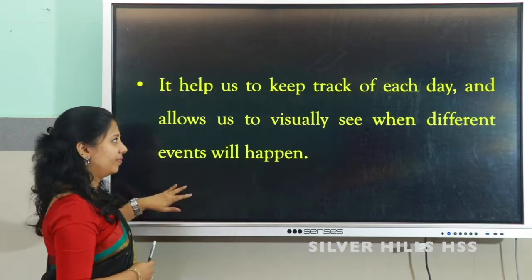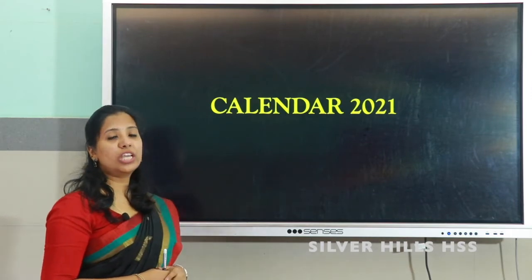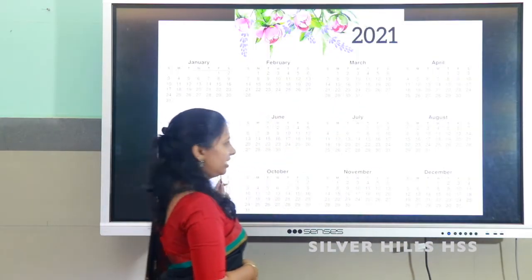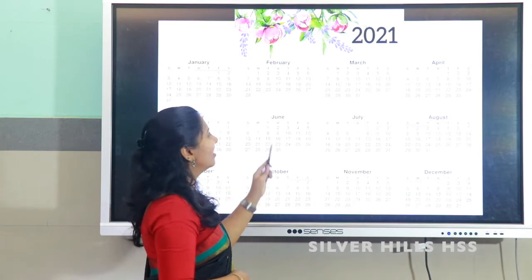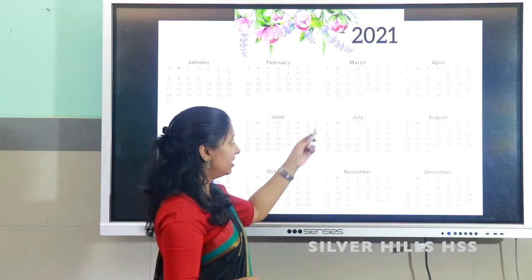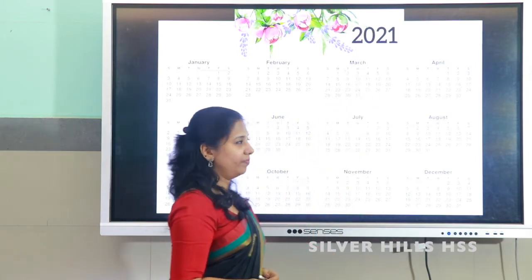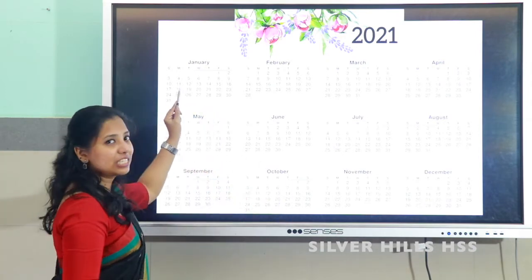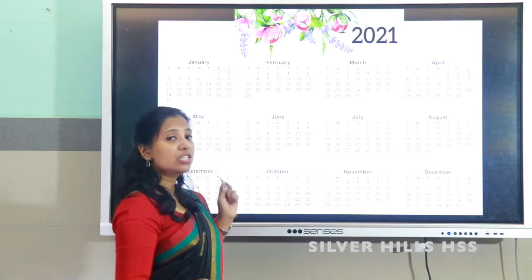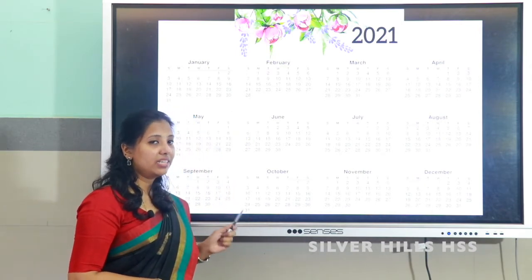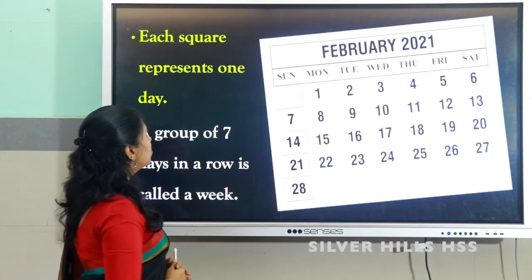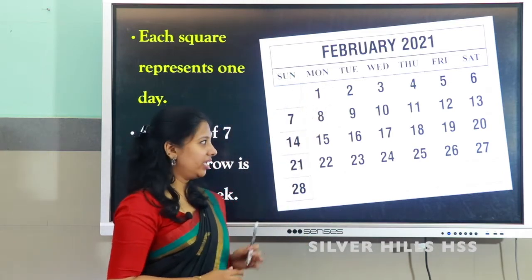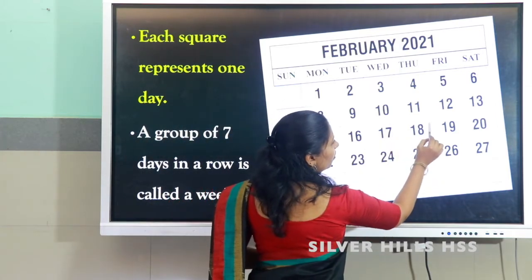A calendar helps us to track each day and allows us to visually see when different events will happen. Now we will look into an example — calendar 2021. Here you can see the calendar. This is the year shown, that is 2021, from which you can identify which year's calendar it is. You can see some of the months written here. There are 12 months in a year.